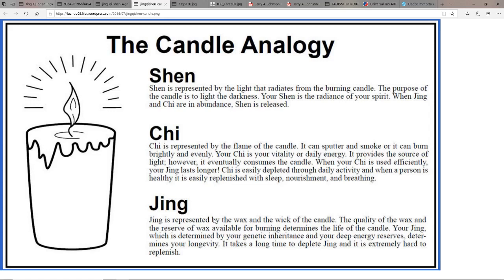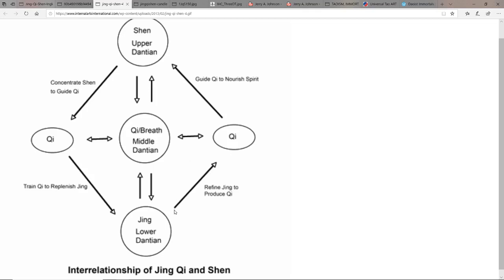And then shen is the light that radiates from the burning candle. The purpose of the candle is to light the darkness. Your shen is the radiance of your spirit. When jing and chi are in abundance, shen is released.